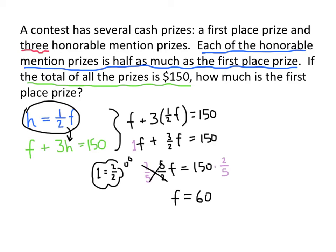Now it's always a good rule of thumb to go back and make sure that you actually answered the question. And the question here said, how much is the first place prize? Our first place prize was F. Remember, F was the first letter of the word first. And so that means that we have answered our question. Our first place prize is $60. And we're done.